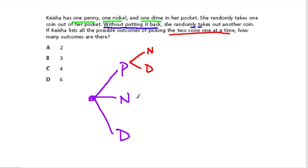If you pick a nickel out on the second pick, there's only a penny and a dime left because you took the nickel out. And if you picked a dime, there's a nickel and a penny left.